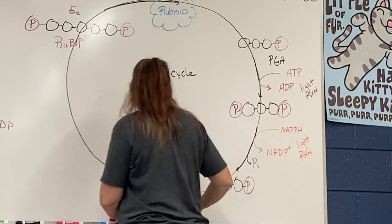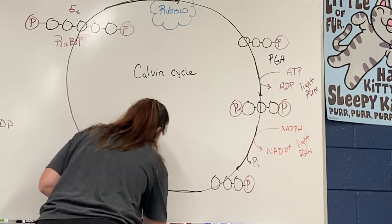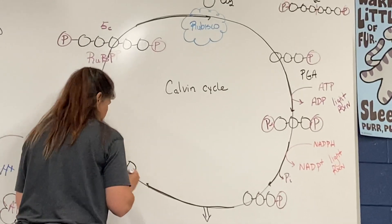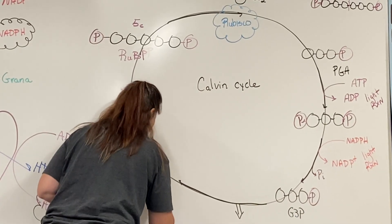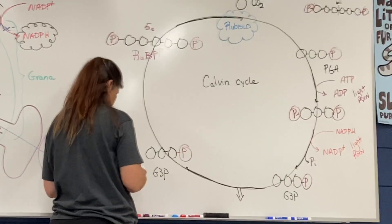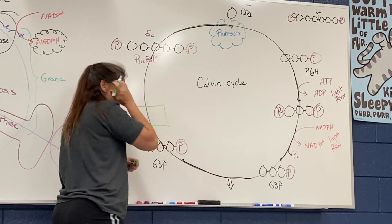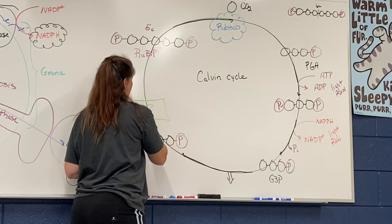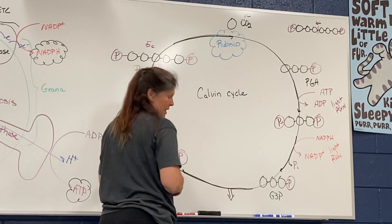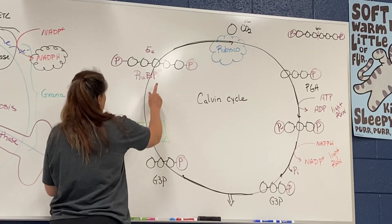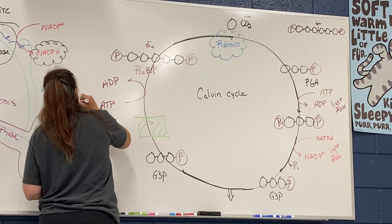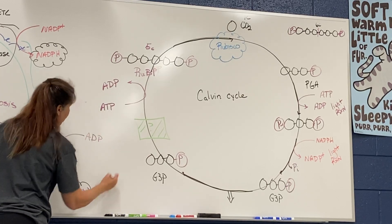The next step gives us G3P, and I'll draw that molecule over here. In a lot of textbooks, you might see multiple arrows here — I always call this the mystery box, because we haven't worked out all these steps yet; we just know multiple things happen. During that time, we need additional ATPs in order to get back our RuBP. And again, where did we get the ATP? We got it from the light reaction.